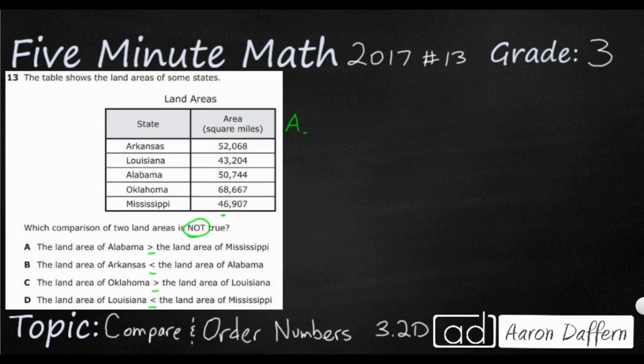So Alabama is right here. So we're just going to write 50,744. This right here is a greater than symbol. I'll tell you how I know that in just a moment. Then the land area of Mississippi,